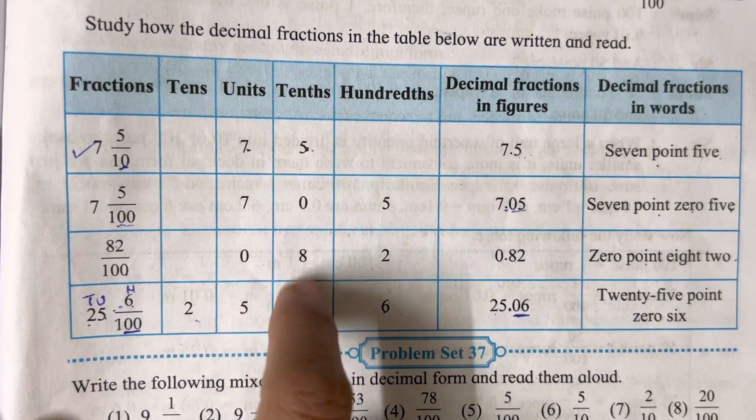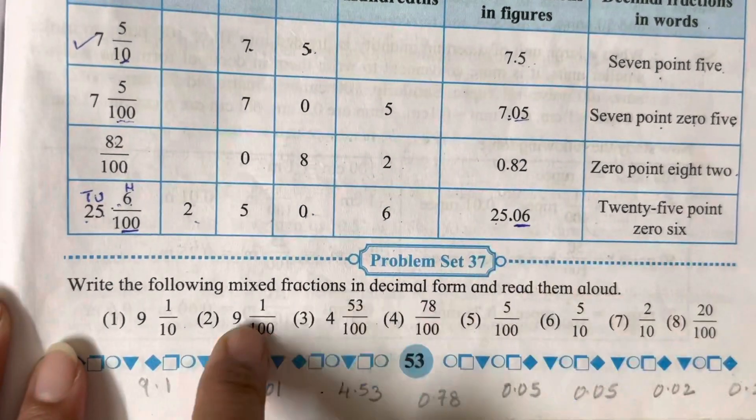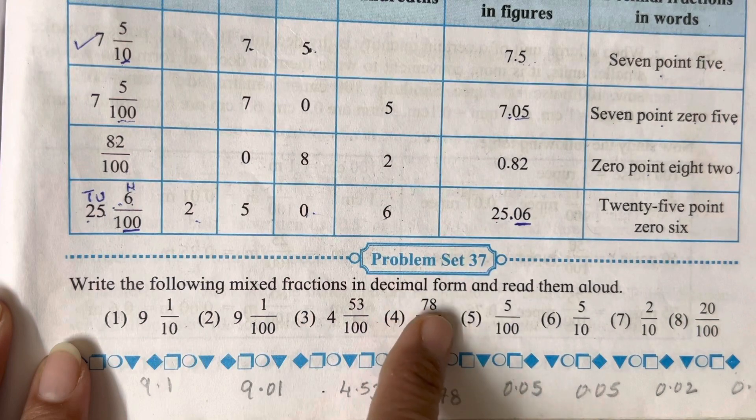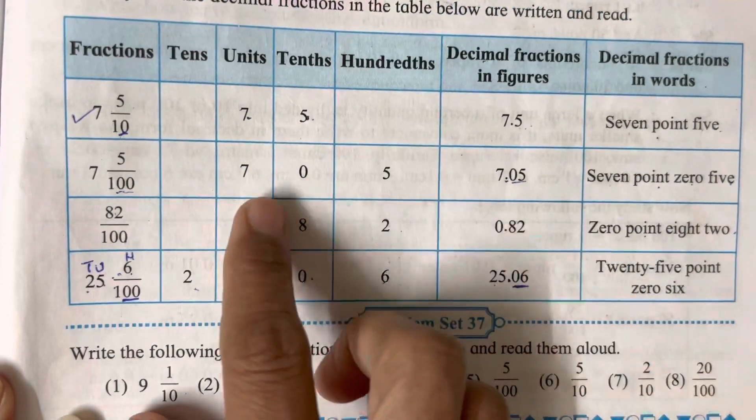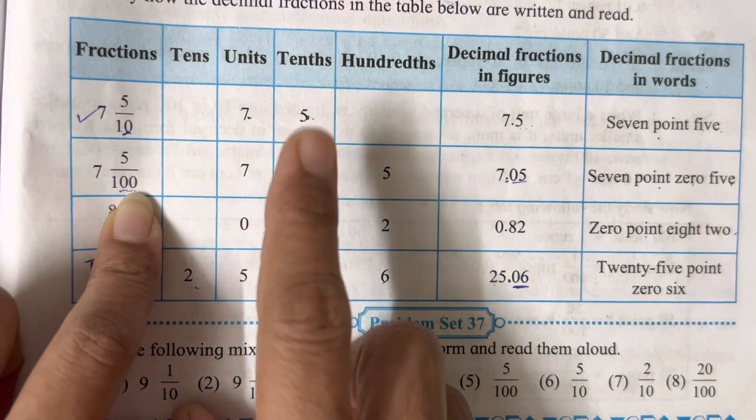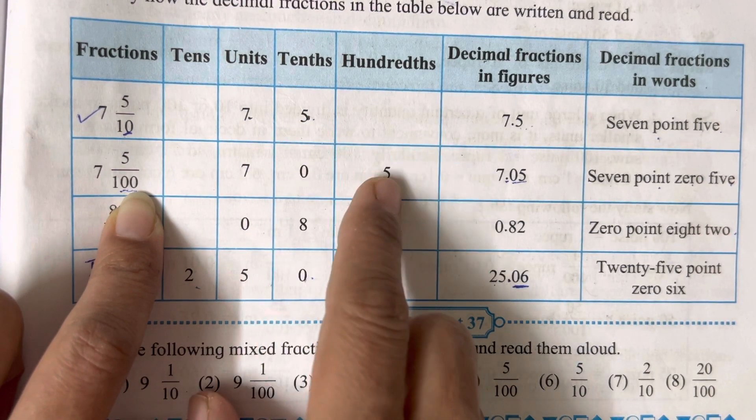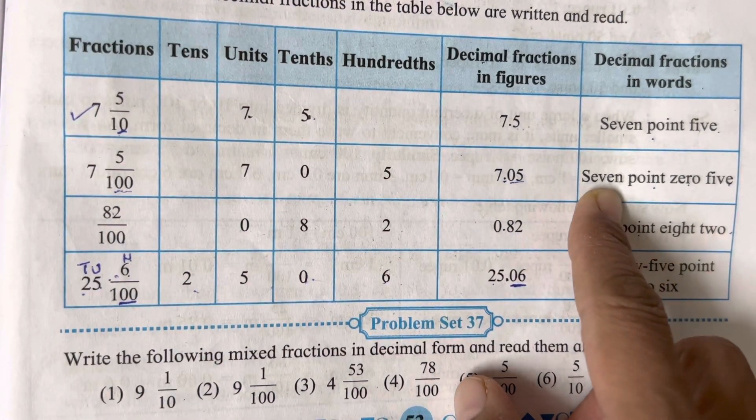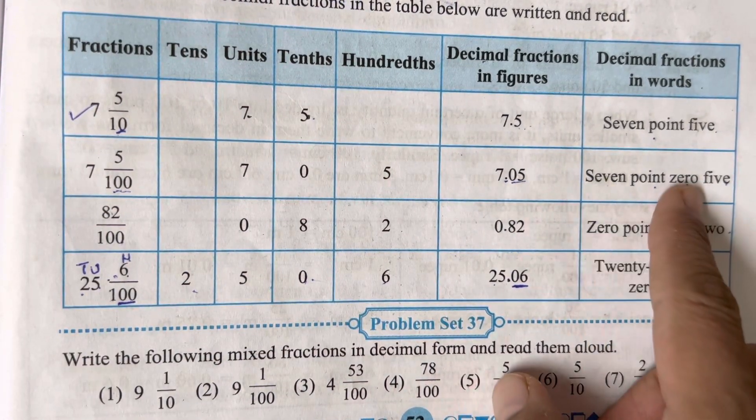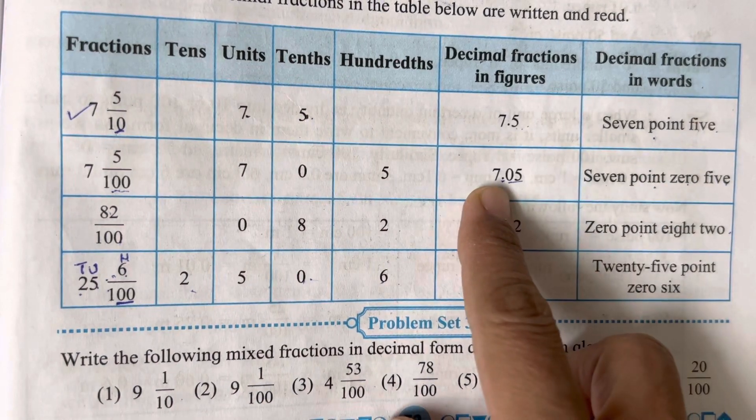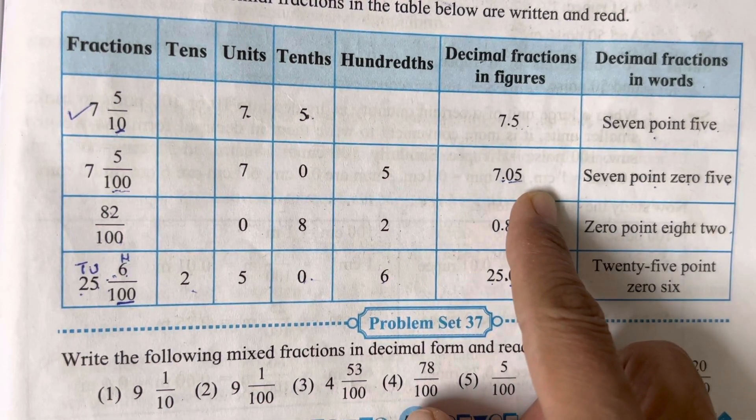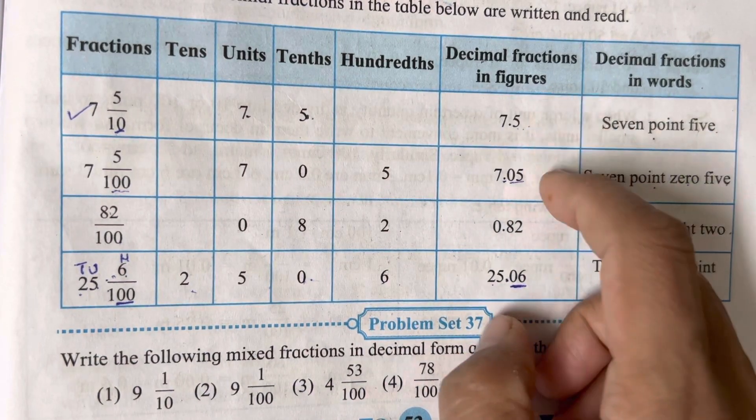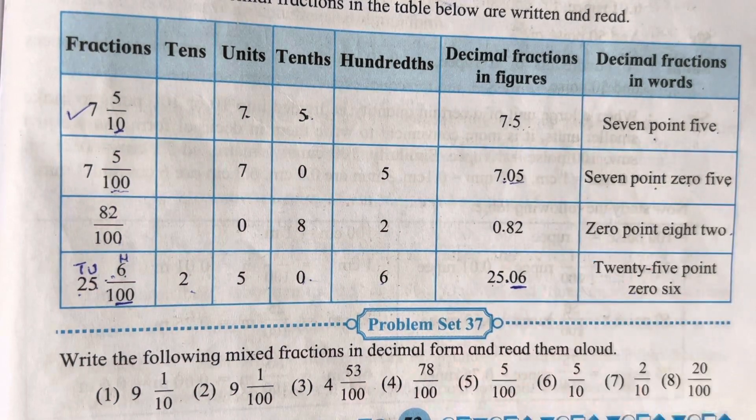So understand this thing. The table has been given on page number 53. In the next video again I will be explaining the other two examples, and we will be solving the sums along with tens and hundreds so that it will be more clear to you. For now you have to only understand this. That means it is going to be zero and five, two digits because two zeros are there, and it has been read as 7.05, seven point zero five.